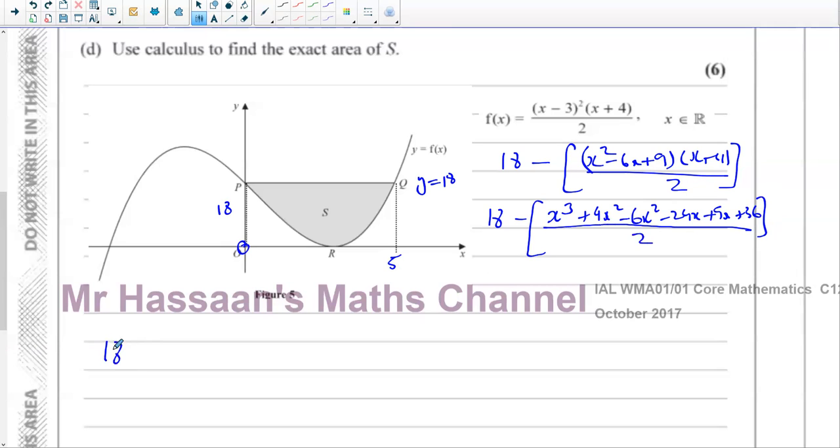I'm going to have minus 6x squared. I'm going to have minus 24x minus 24x plus 9x and plus 36. And all of that is going to be over 2. So continuing over here, you have 18 minus, let's just simplify these. You've got x cubed. 4x squared minus 6x squared is minus 2x squared. And I'm going to have minus 24x plus 9x is minus 15x. And I've got plus 36.